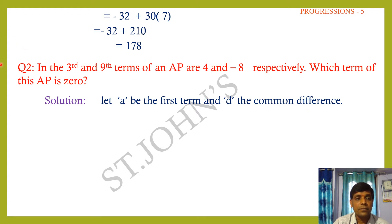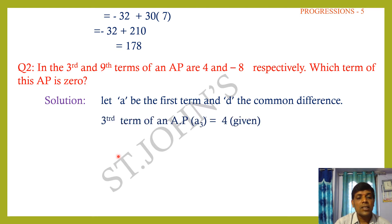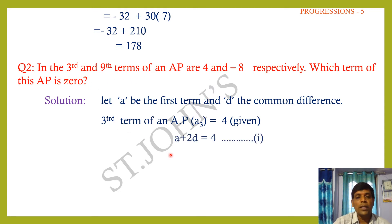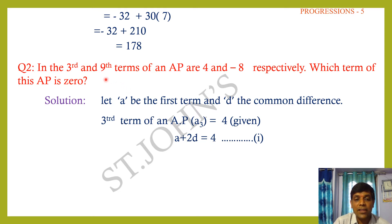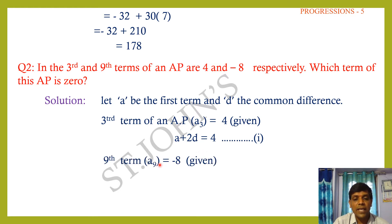Third term: a₃ = 4, written as a + 2d = 4. Ninth term: a₉ = −8, written as a + 8d = −8. Subtracting equation 1 from equation 2: 8d − 2d = 6d, and −8 − 4 = −12. So 6d = −12, giving d = −12/6 = −2.